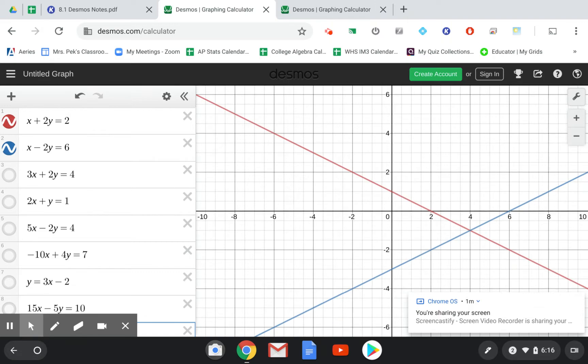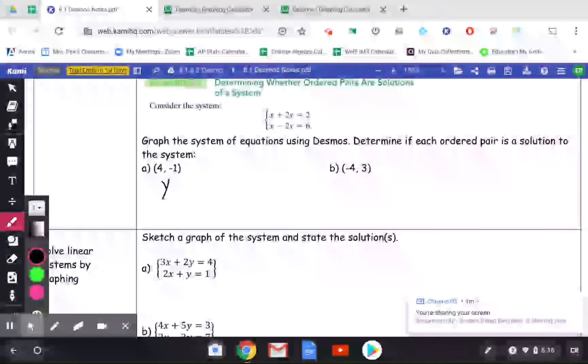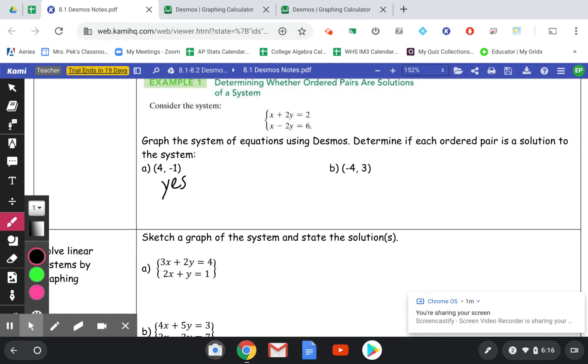So the solution to this system is the point of intersection, which is the point (4, -1). And here, (4, -1) is the solution. (-4, 3) is not the solution. And because there's no real, we're not doing it algebraically, there's no like work to show if we're using Desmos here.